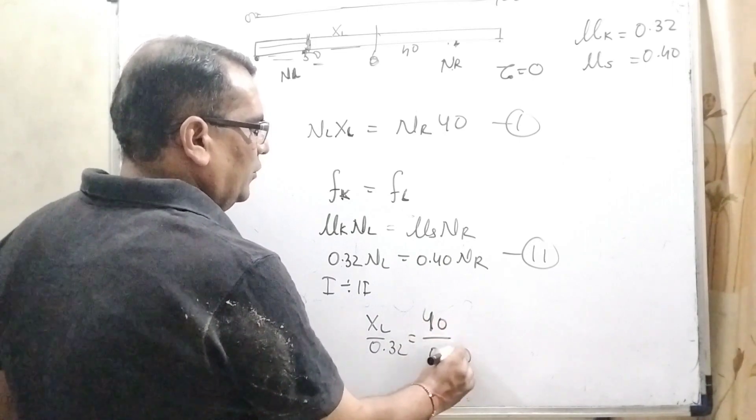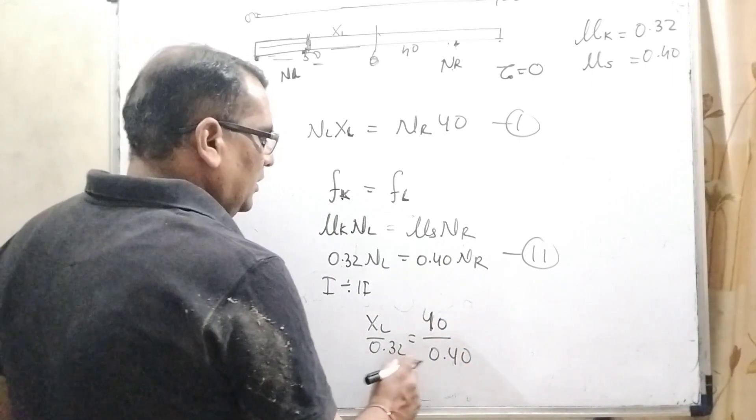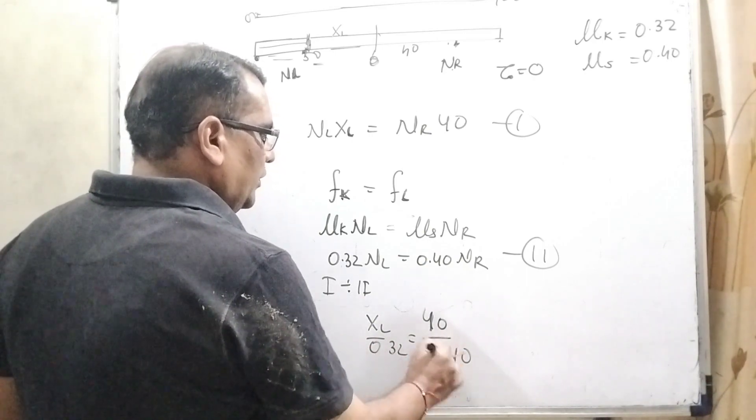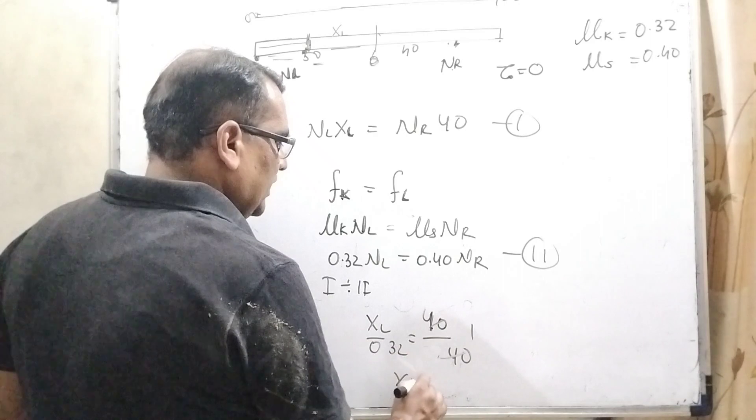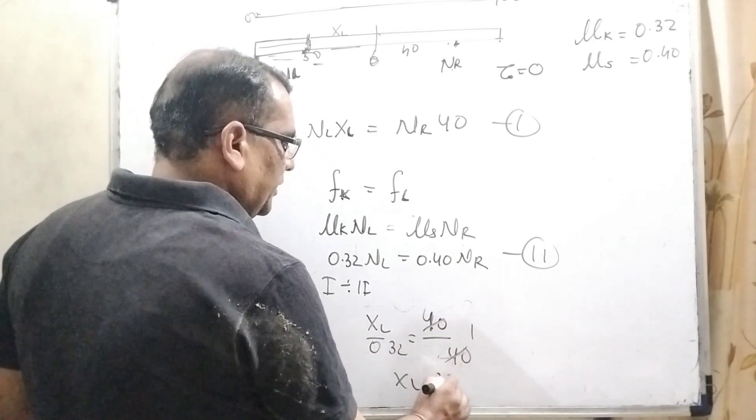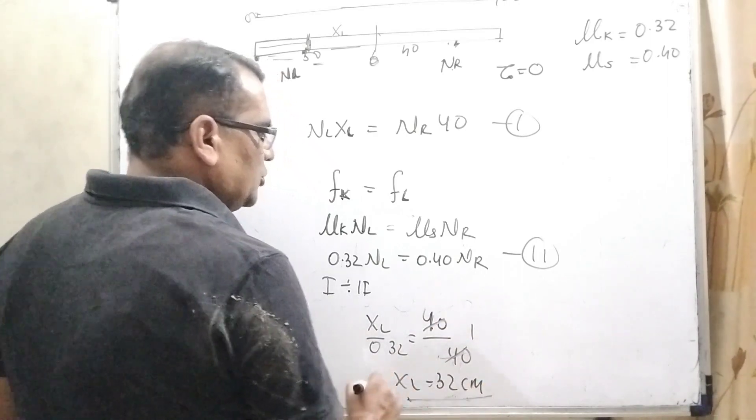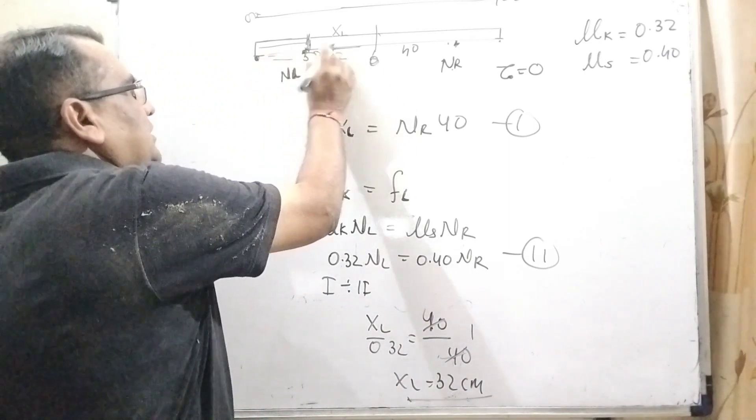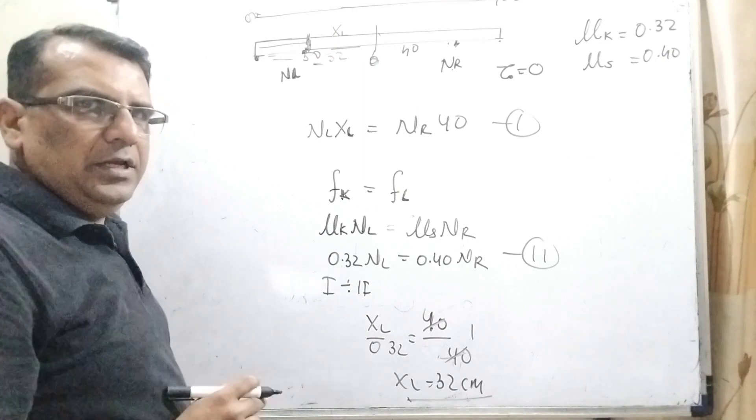Now first divided by second, then NL × XL cancel. XL upon 40 = NR × XR. NL cancels. XL upon 0.32 = 0.40. So it is the first case. Here it will move, distance is 32 centimeter. Clear?